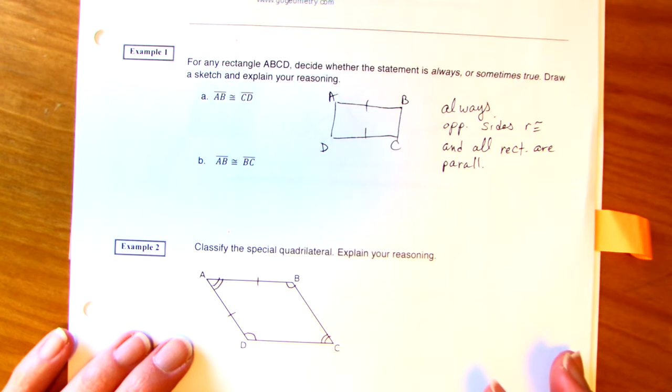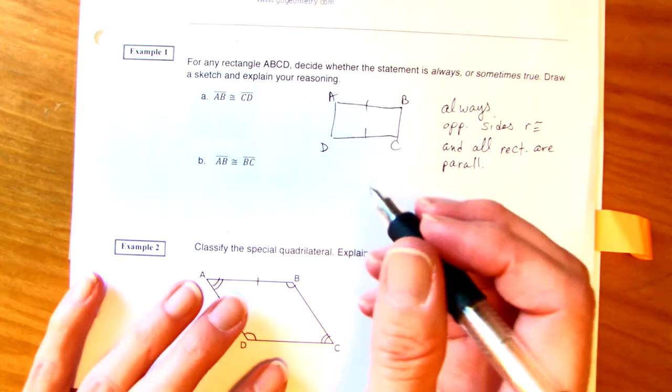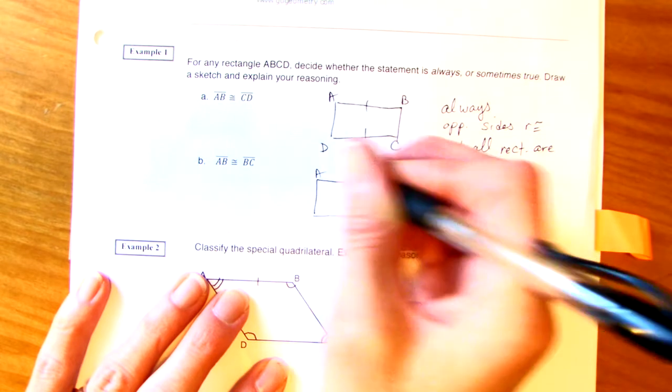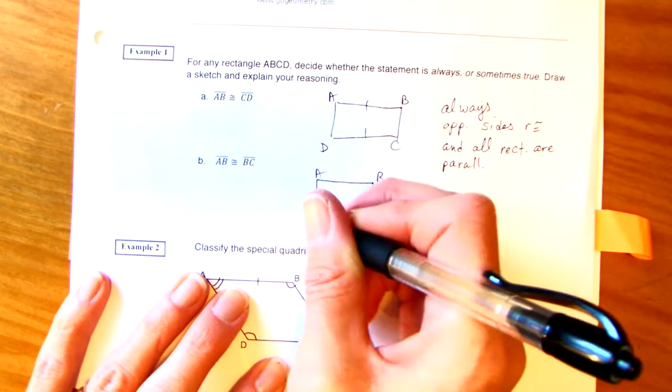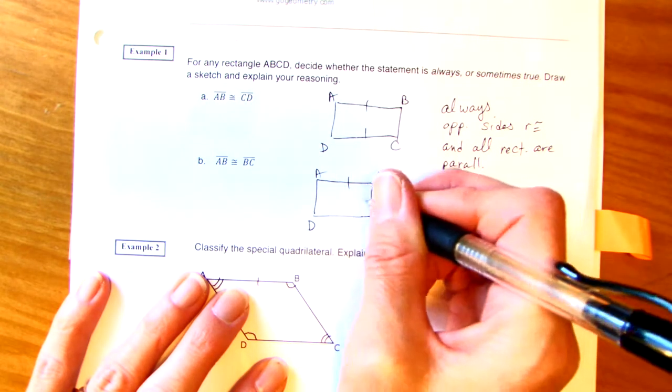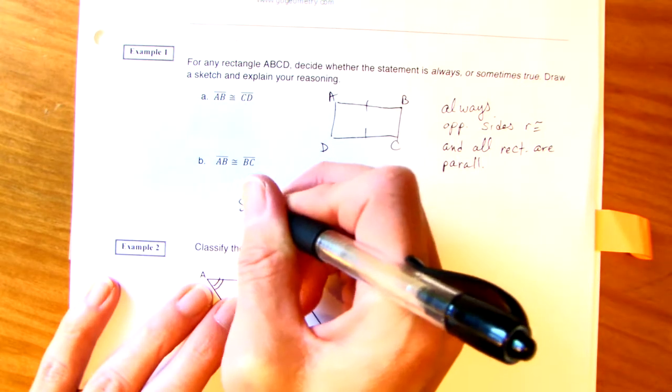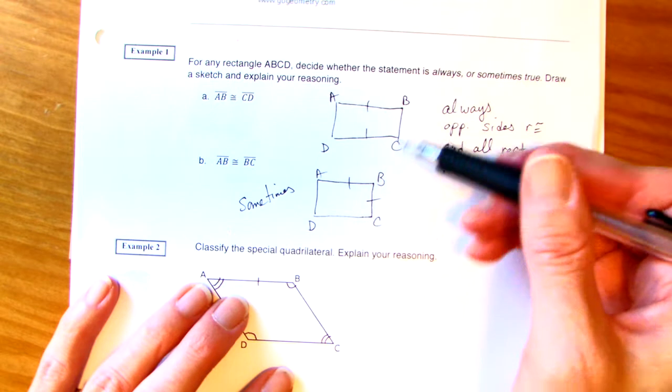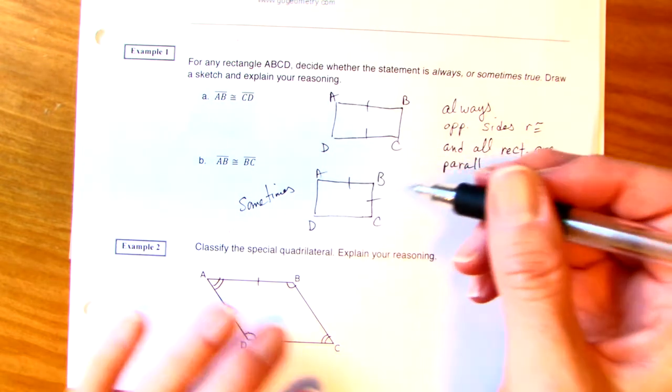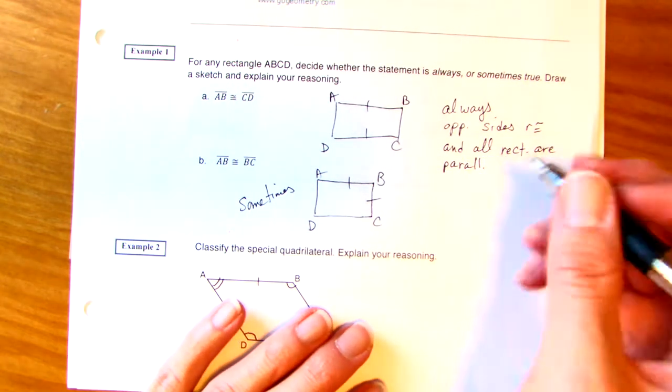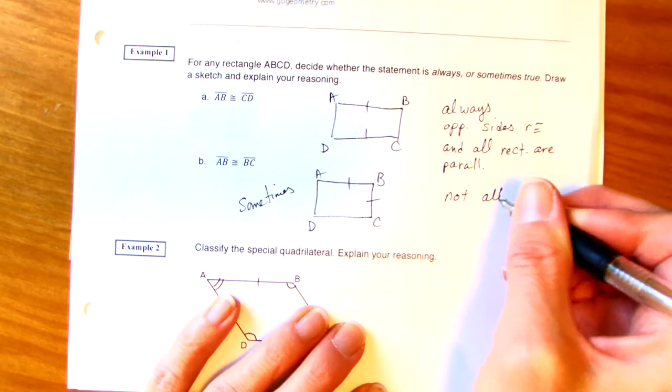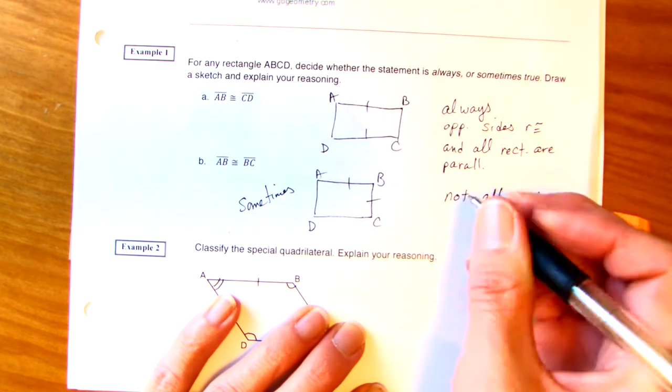How about this one? AB is congruent to BC. Sometimes. Because you can have an elongated rectangle, but these would only be congruent if it was a square. But you could say not all rectangles are squares.